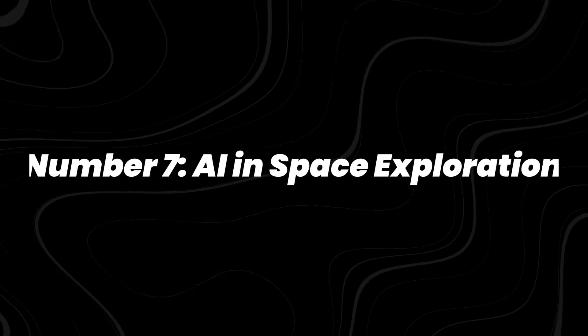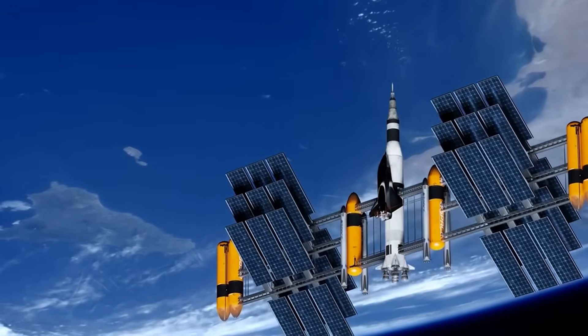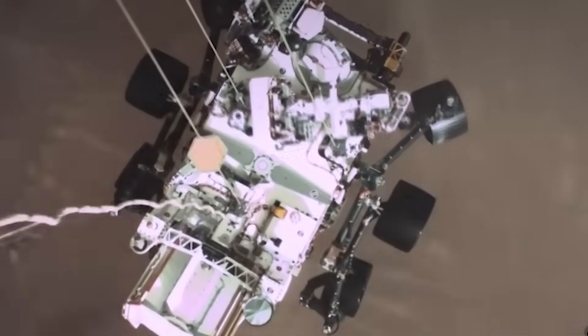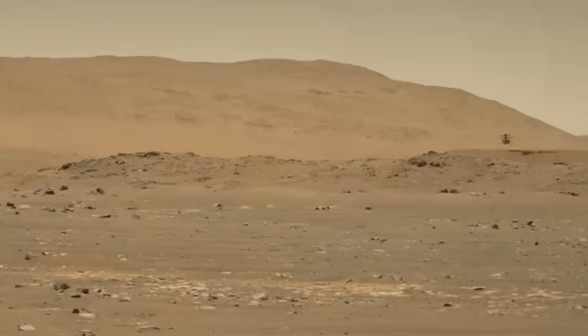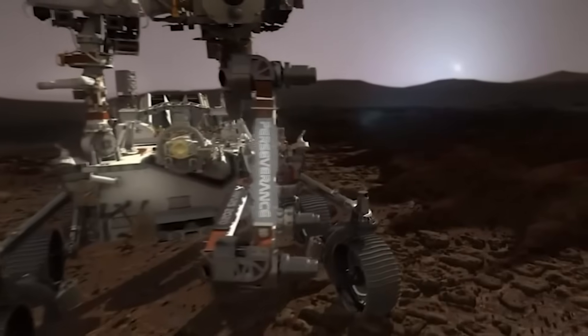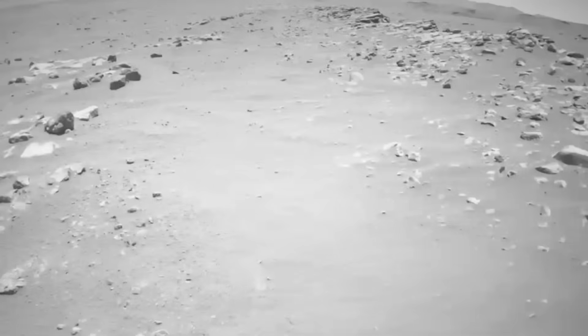Number 7, AI in Space Exploration. Space missions are starting to run on their own brains. NASA's Perseverance rover already uses an AI navigation system called AutoNav, which lets it pick routes across Mars without waiting for human commands, saving engineers hours of signal delay.